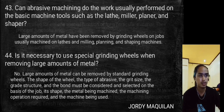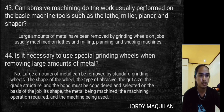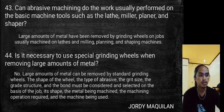Can abrasive machining do the work usually performed on basic machine tools such as lathes, millers, planers, and shapers? Large amounts of metal have been removed using grinding wheels on jobs usually machined in lathes and milling, planning, and shaping machines. Large amounts of metal can be removed by standard grinding wheels — the shape of the wheel, the type of abrasive, the grit size, the grade, structure, and bond must be selected based on the job, its shape, the metal being machined, the operation required, and the machine being used.